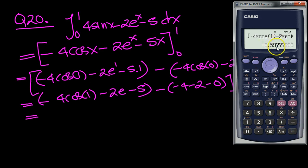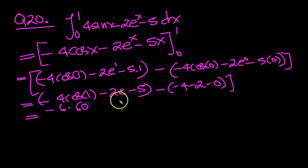And you get minus 6.597. The 59 rounds up to 60. Minus 6.60. And that was to 2 decimal places, wasn't it?